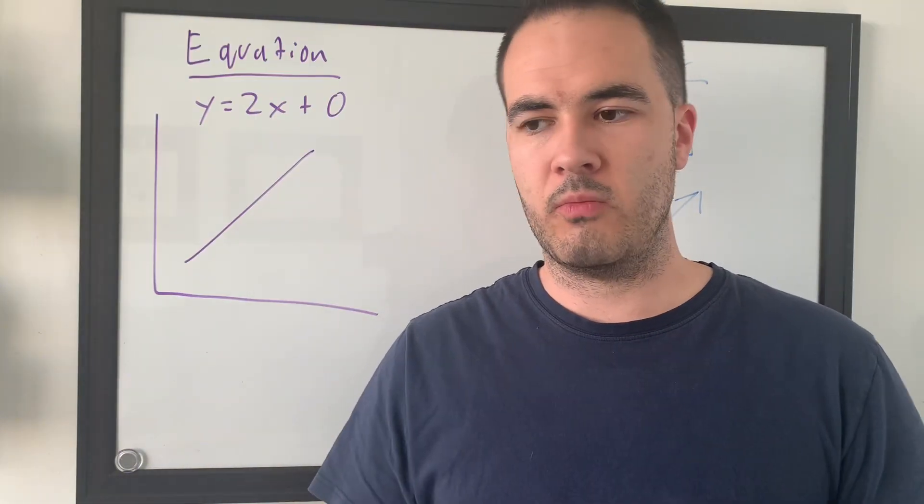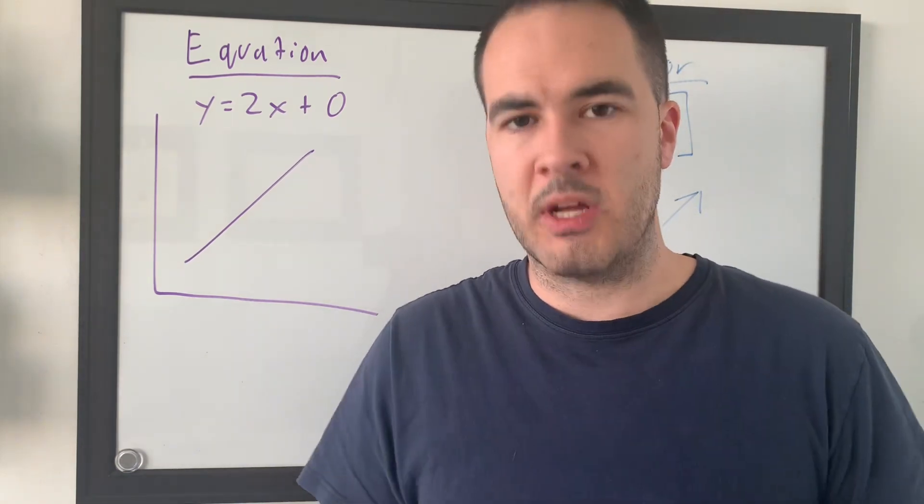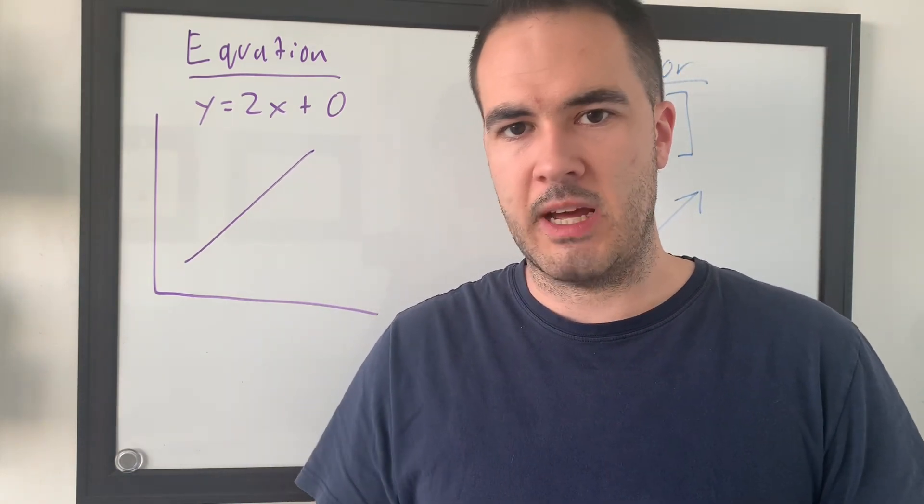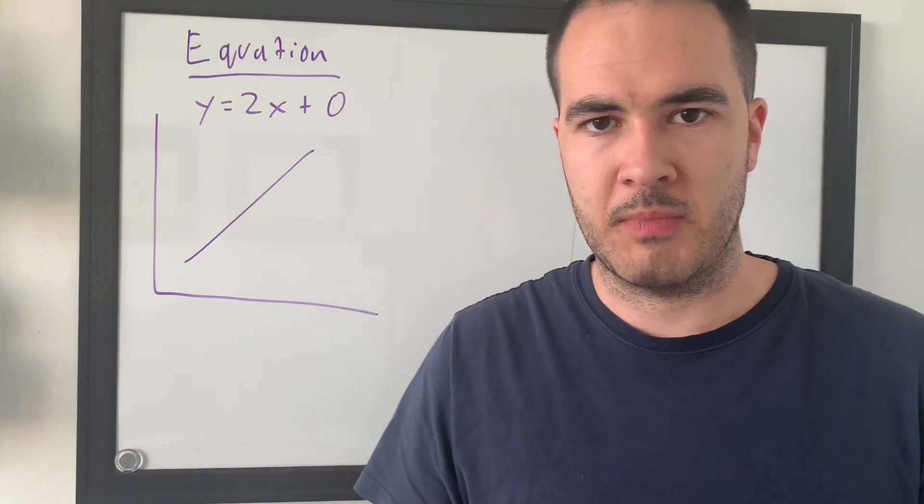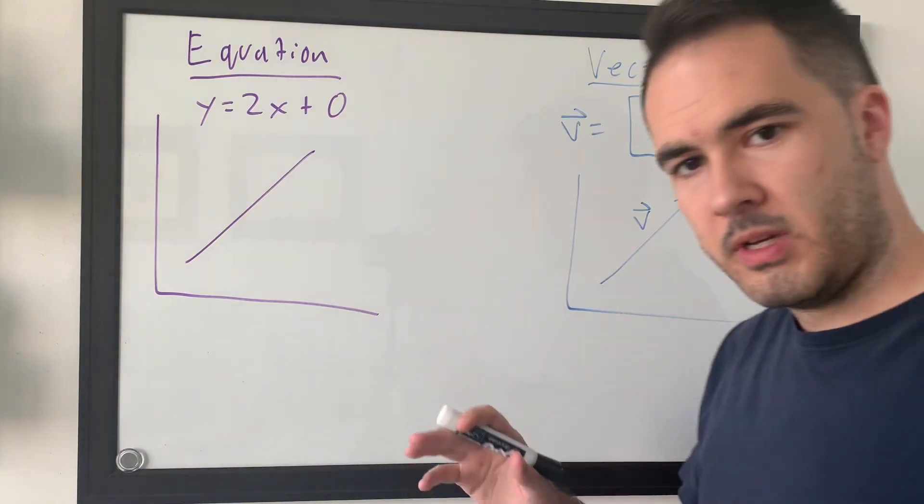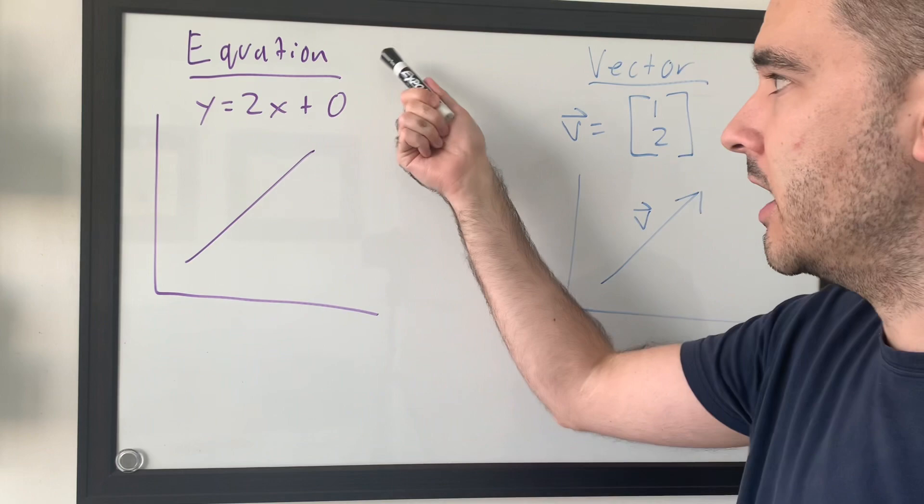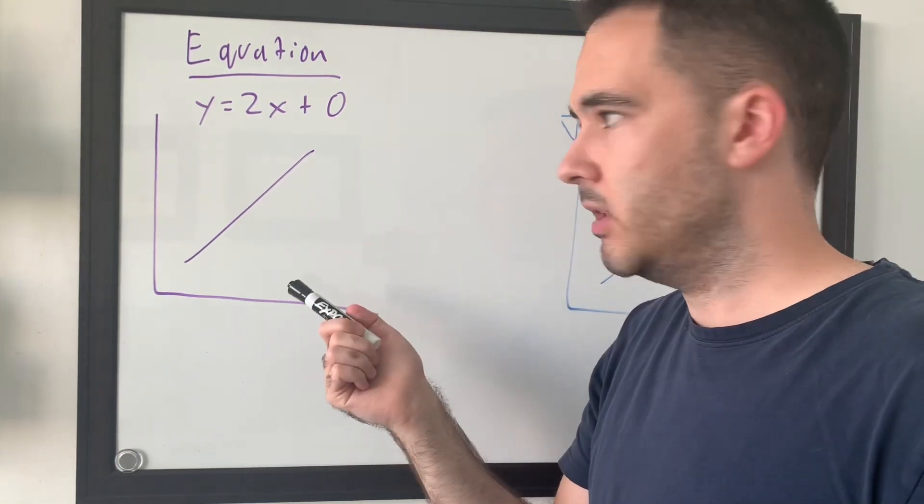However, it's important when we start looking at linear algebra that we also understand geometrically what a vector is outside of its formal definition. So, let's illustrate that. So, normally, vectors in what you're used to are still these lines that exist. So, in high school, you would see them as equations of the line.